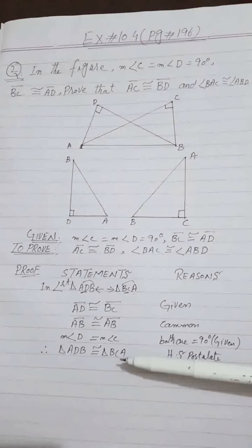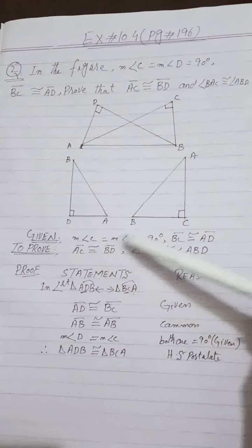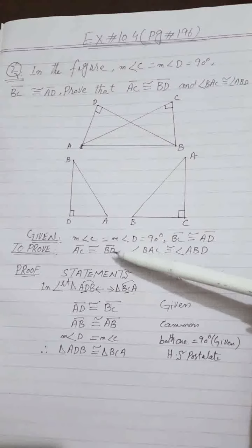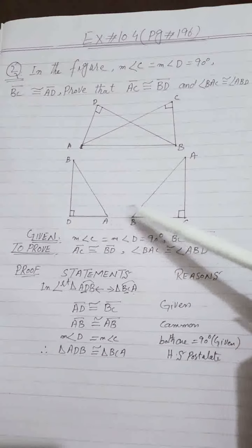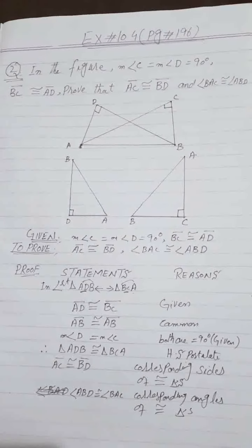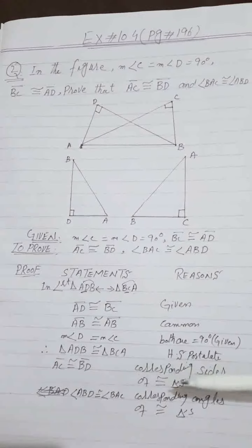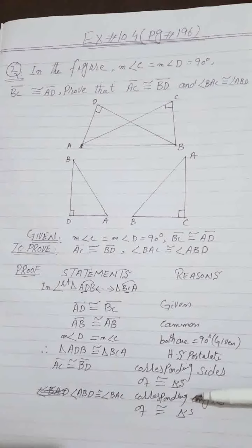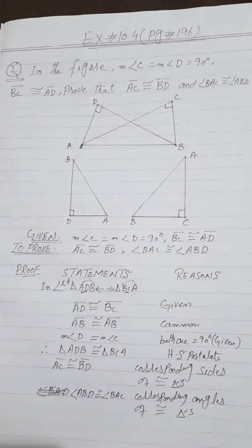We have triangles and we need to prove the corresponding parts. The corresponding side AC is congruent to BD — corresponding sides of congruent triangles. Angle BCA corresponds to angle ABD — corresponding angles of congruent triangles. Students should write the theorem using the congruence sign for triangles. These two questions were easy theorems — I hope they are clear.